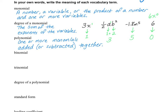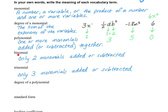So if I took a whole bunch of monomials and put them together in a group by adding or subtracting them, then that would be a polynomial. Polynomial is the general term. A special type of polynomial would be a binomial and a trinomial. A binomial — if you think of a bicycle has two wheels — so that would be two monomials that are added or subtracted together.